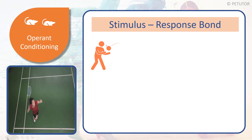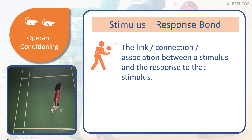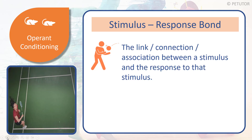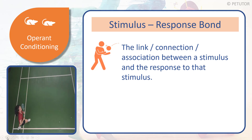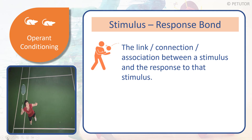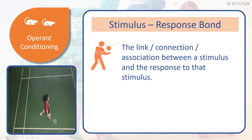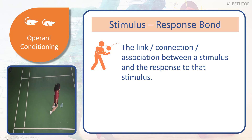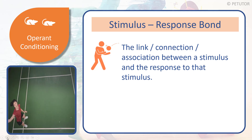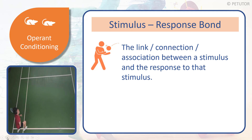When we talk about the Stimulus Response Bond, we talk about a link, connection, or association between a stimulus — in this case the shuttlecock being played in a particular way — and the response to that stimulus, which is the smash shot. So the stimulus is the shuttlecock played high and deep to the back of the court, and the response to that stimulus is to play a smash shot.